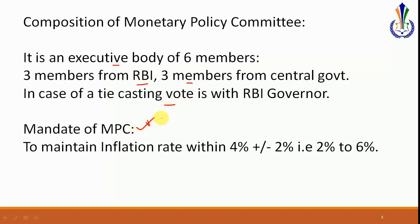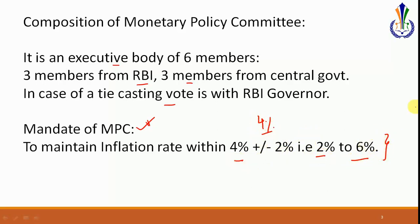The mandate of the MPC is an important one. A range has been designated for inflation targeting. Previously, there was no range within which inflation was to be regulated. Now, inflation has to be regulated within a range of four percent, which is a plus or minus of two percent, meaning the RBI targets four percent but it can range from two percent to six percent.